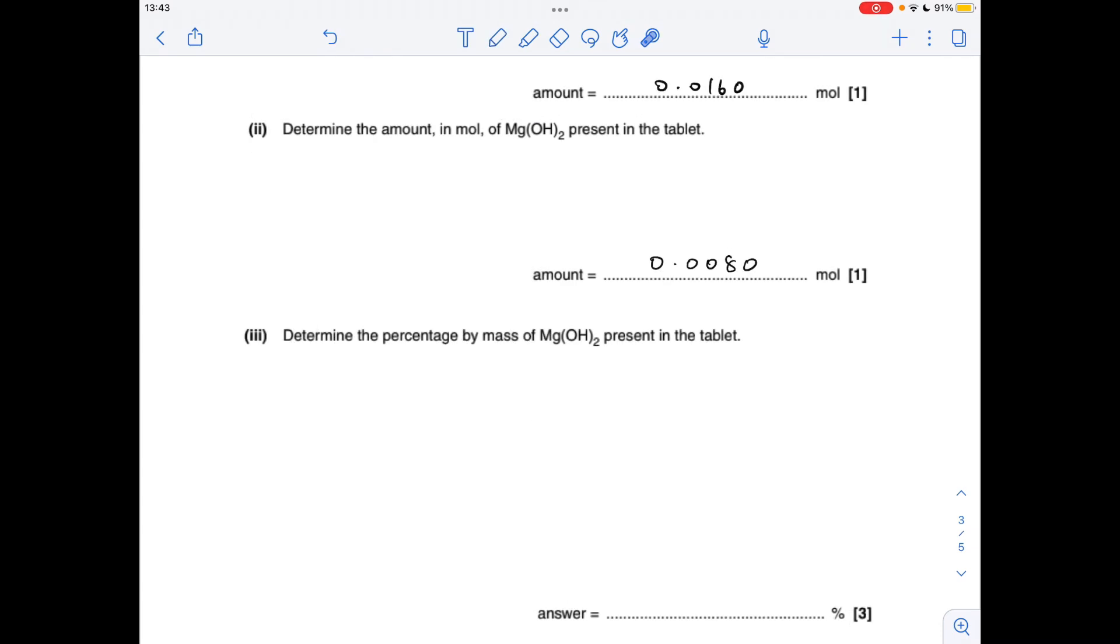And then to get the percentage by mass of magnesium hydroxide in the tablet, we need to find out how many grams of magnesium hydroxide that is and find that as a percentage of the mass of the tablet. So the mass of magnesium hydroxide: moles times MR, it's that number there. The mass of the tablet, just be careful—they've given us the tablet mass in milligrams, but obviously we're working in grams here, so that's 0.5 grams. For the percentage by mass of magnesium hydroxide, so obviously the mass of magnesium hydroxide over the mass of the tablet times 100: 93.3%.